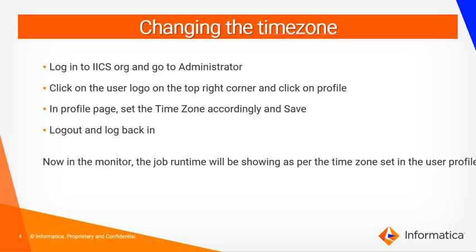To change the time zone in IACS, log in to your IACS org and go to the Administrator Console. Click on the User Logo at the top right corner and click on Profile. In the Profile page, set the time zone to the desired one and hit Save. Once done, log out and log back in to your IACS org. Now in the Monitor, the Job Runtime will be displayed as per the time zone set in the User Profile.